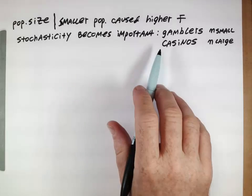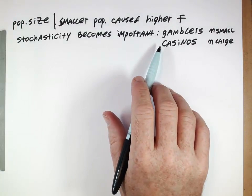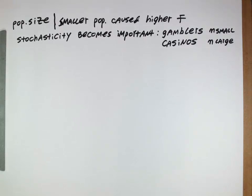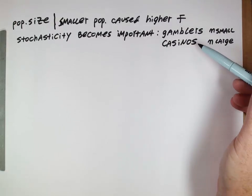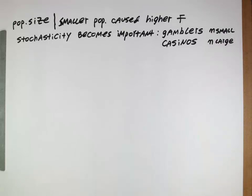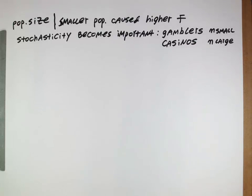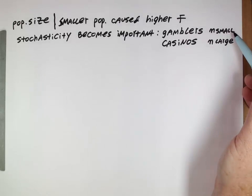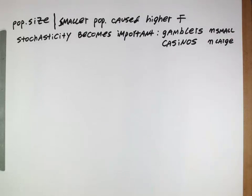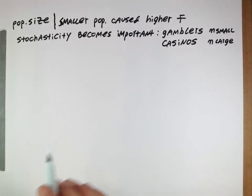The analog here is for populations of organisms. If it's a very large population, that population will be more like a casino — things are more predictable and all those equations we derived will be accurate. But for smaller populations, which are more like gamblers where the number of reproductions is small, chance events can have a bigger effect, and the equations we derived may not be as accurate because randomness becomes really important. So this is one thing to keep in mind: the effect of randomness.